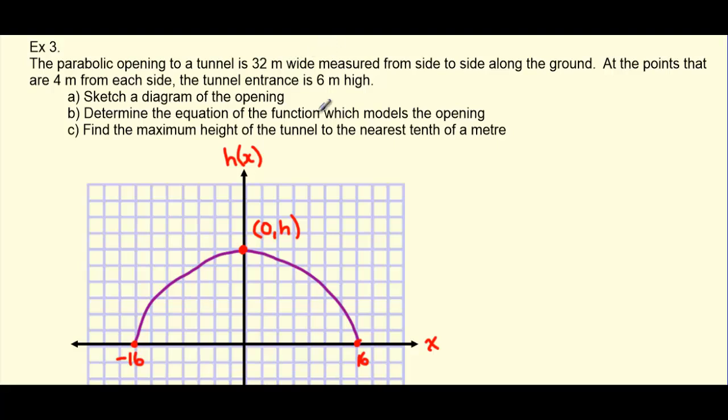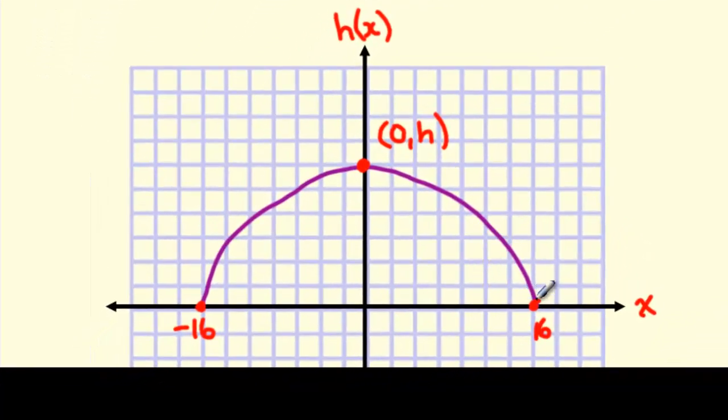Now we're also given a bit more information. We're told that at the points that are 4 meters from either end, so 4 meters in from here or 4 meters in from here, we have a height of 6 meters for our tunnel. So what that means is we can draw a point here and a point here, both of them 4 meters away from the end. So this would be at 12, and this would be at negative 12, 4 meters from those ends.